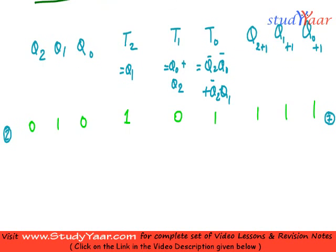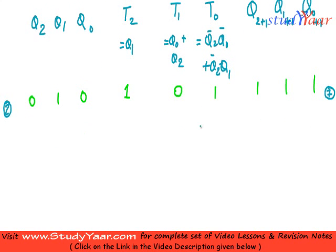Now let's look at what happens when the circuit goes to unused state 5. State 5 is 1-0-1. In this case, T2 is equal to Q1, which is 0.